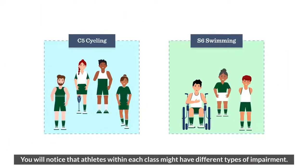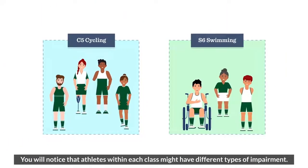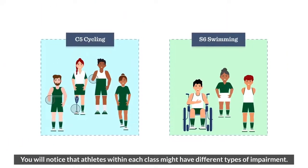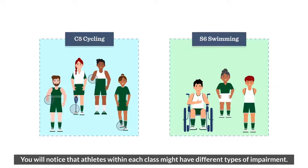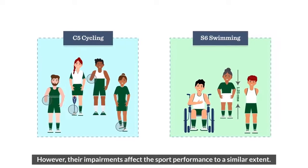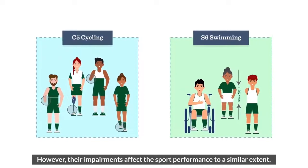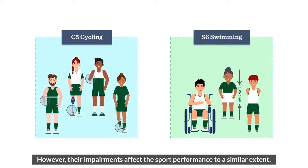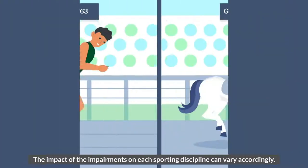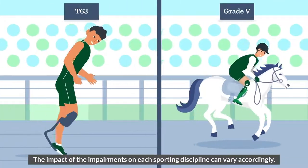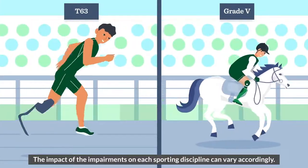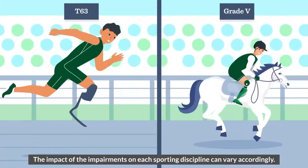You will notice that athletes within each class might have different types of impairment. However, their impairments affect the sport performance to a similar extent. The impact of impairments on each sporting discipline can vary accordingly.